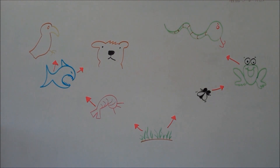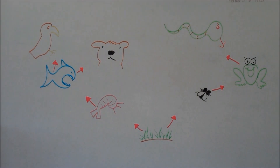A food web is just a way to visualize the feeding relationships of animals in an ecosystem.